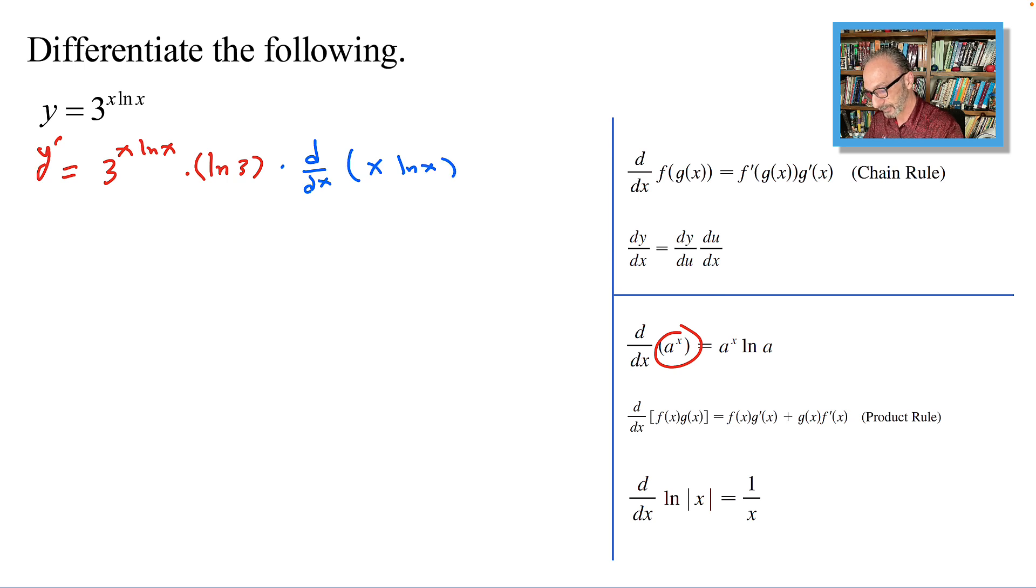Equals 3 to the x ln x multiplied by ln 3 times the derivative of x ln x. Using the product rule down below right here, we will end up with the following.